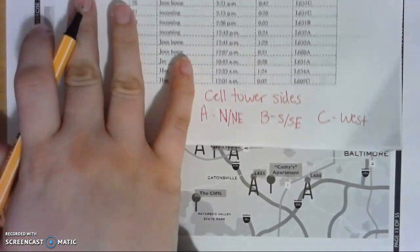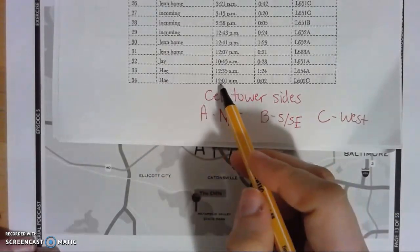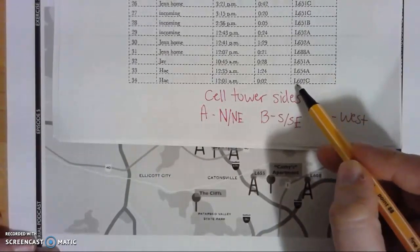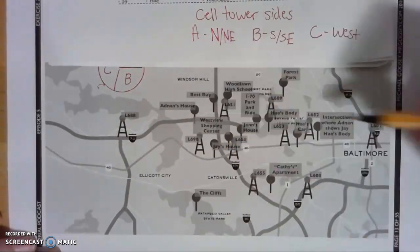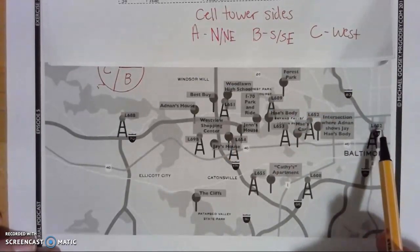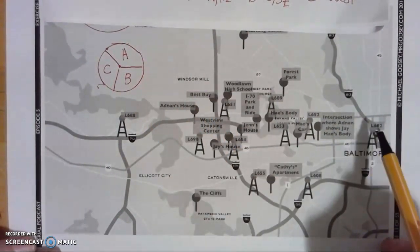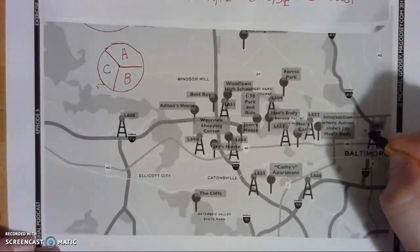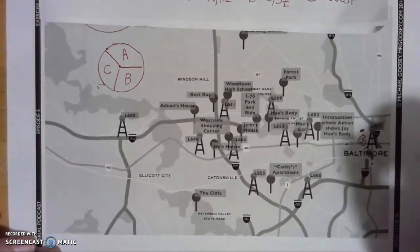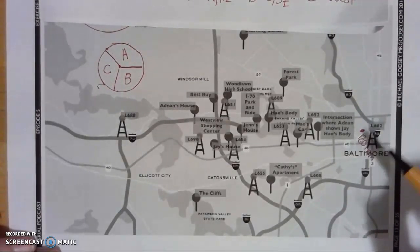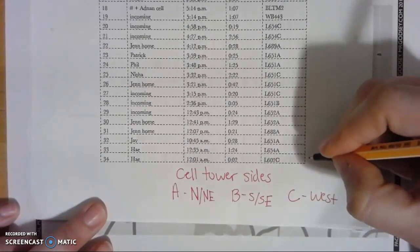So we're going to practice using the first call of that morning at 12:01 AM. Adnan — or whoever had Adnan's cell phone — called Hae at 12:01 AM. It was only two seconds and the cell tower is L602C. Here I found L602 right there on the map. Since it's C, it has to be somewhere over here, so I'm dropping a little pinpoint. I'll note this as 12:01 AM, roughly around Baltimore for the location.